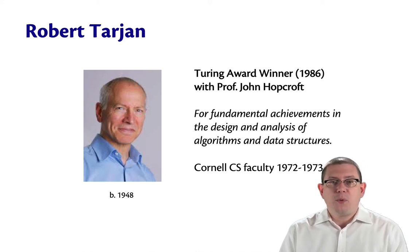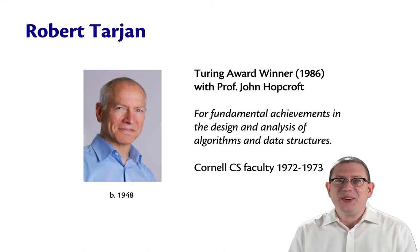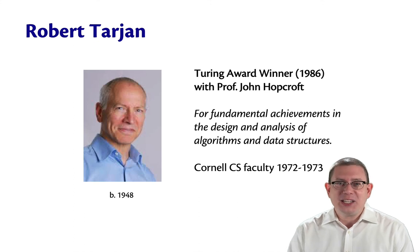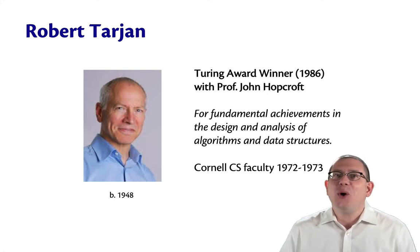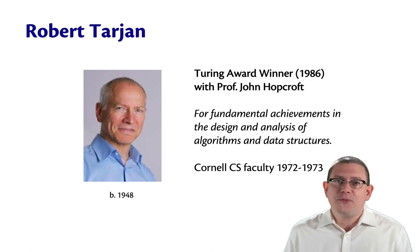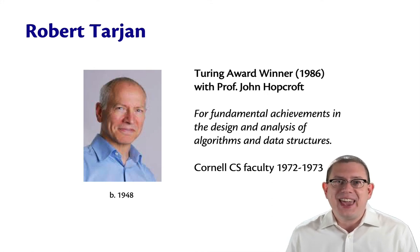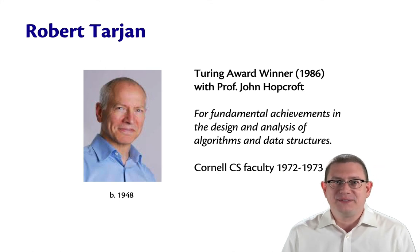Now, Bob was Cornell CS faculty for one year only, 1972 to 1973. One time I asked Professor Hopcroft why Tarjan had only stayed here for one year. The story he told me was that Bob was really a California boy and he couldn't take the Ithaca weather in the winter, so he left after one year of it.